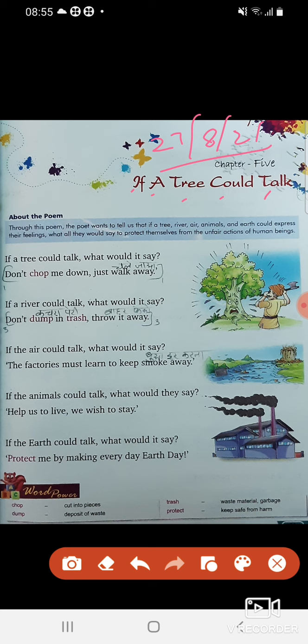So about this poem, the poet wants to tell us if a tree, river, air, animals and the earth could express their feelings, what all they would say to protect themselves from the unfair actions of human beings. If a tree, river, air, animals and the earth could talk about their feelings and share their feelings, what are they saying? They want to protect themselves. What does that mean? That humans are doing harmful things.